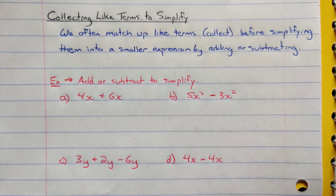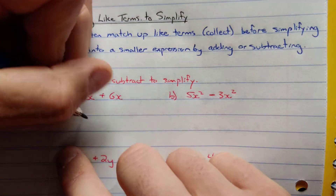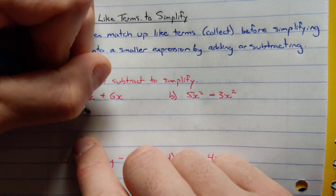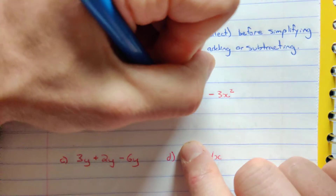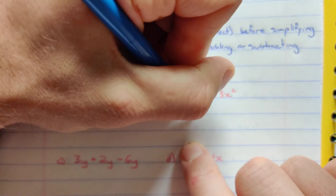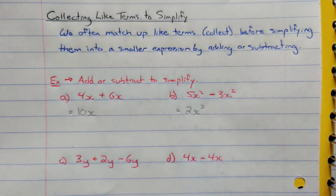In part a: 4x plus 6x. These are like terms — both lines. It's like having 4 lines plus 6 lines, giving a total of 10 lines, so 10x. In part b: 5x squared minus 3x squared. That's 5 squares minus 3 squares, leaving 2 squares — so 2x squared.